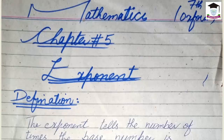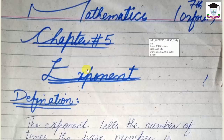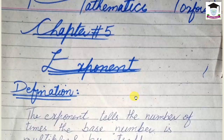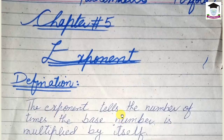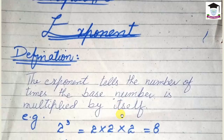Assalamualaikum dear students, now we are going to start our math chapter number 5, which is named exponents. First we will see what is the exponent. Its definition: the exponent tells the number of times the base number is multiplied by itself.